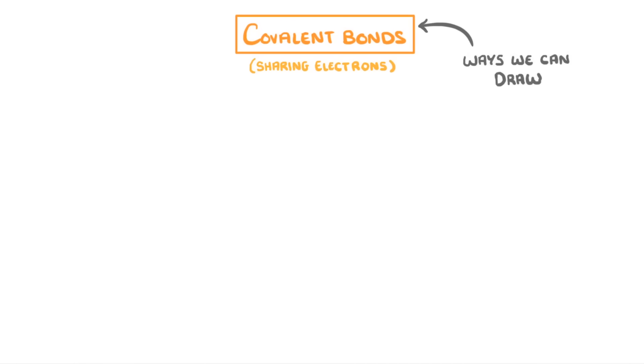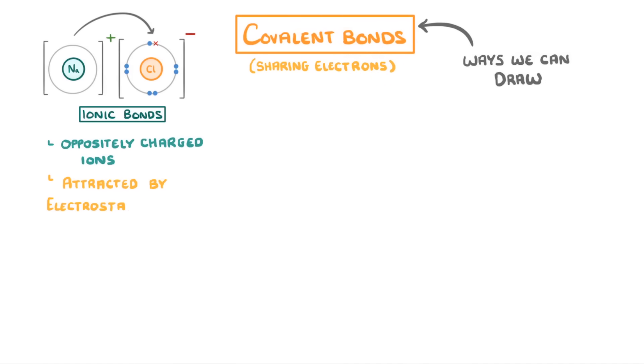To very quickly recap, we've already seen how some atoms can form ionic bonds by transferring electrons from one atom to the other. This makes oppositely charged ions that are then attracted to each other through electrostatic forces, which hold them together.